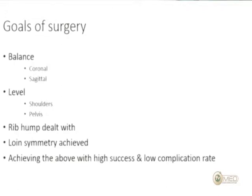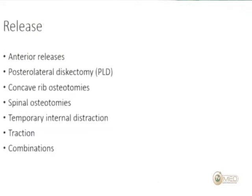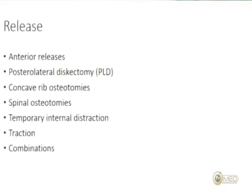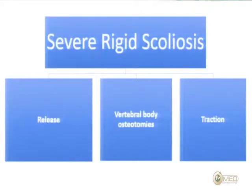Additional goals include dealing with the rib hump, obtaining loin symmetry — which is very disfiguring when asymmetric — and achieving all of the above with the least possible complications. To achieve correction in these patients you must perform some form of release to mobilize the spinal segments. There is a long list of possible releases: anterior or posterior releases, concave rib osteotomies, and various types of spinal osteotomies.